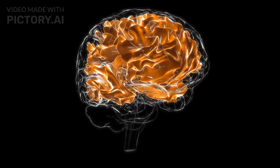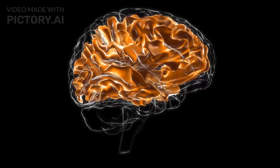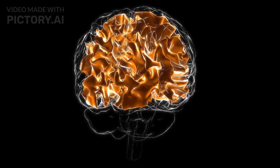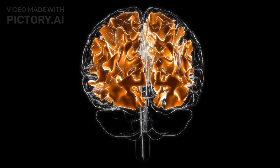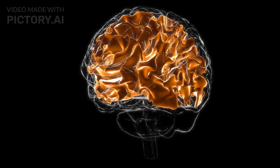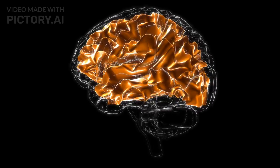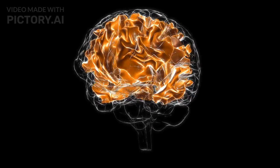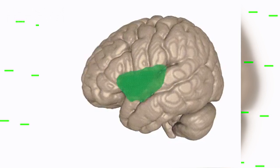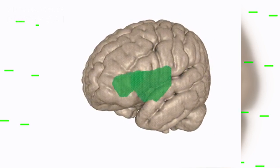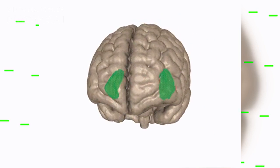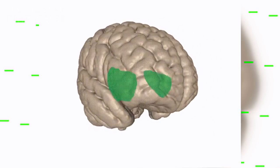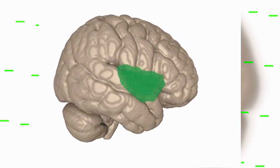Gray matter and white matter make up the brain, with gray matter consisting of various cells and white matter composed of axons. The brain's cortex, or cerebral mantle, is highly convoluted, increasing its surface area for complex functions.